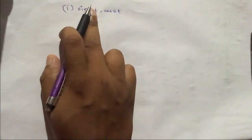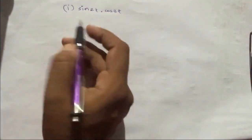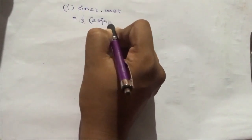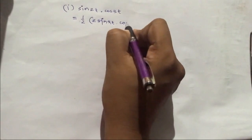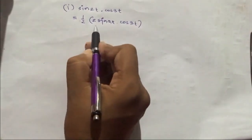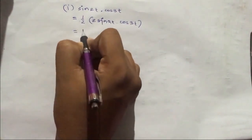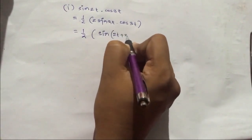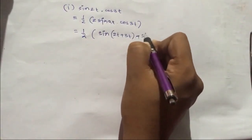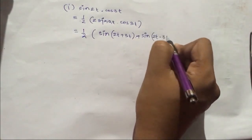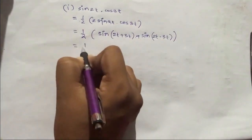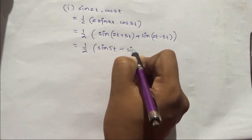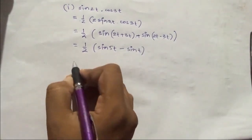This is the first question: we need to find the Laplace transform of sin(2t)·cos(3t). We can write it as half of 2·sin(2t)·cos(3t). Now this is of the form 2·sinA·cosB, so we can write it as sin(A+B) + sin(A-B), which gives us sin(5t) + sin(-t), simplifying to sin(5t) - sin(t).